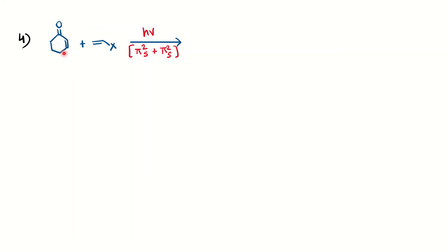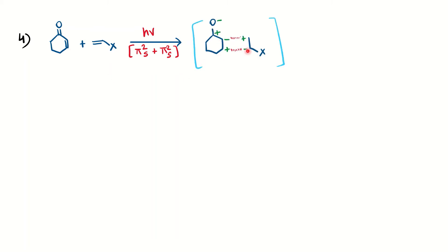Here you have an alpha-beta unsaturated carbonyl compound plus a dienophile with an electron withdrawing group. We know a dienophile acts as an electron acceptor, and the electron withdrawing group makes this reaction faster. You can show 2+2 addition under photochemical conditions — π2s + π2s. For regioselectivity, use the same trick: imagine minus-plus charges. The minus is stabilized by the X group, so draw X opposite to the carbonyl group for the major product. X near the carbonyl gives the minor product.